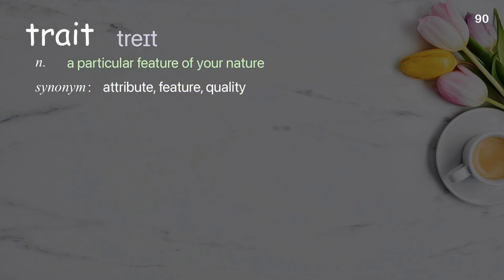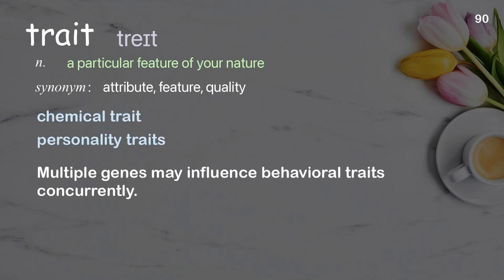Trait: A particular feature of your nature. Examples: Chemical trait. Personality traits. Multiple genes may influence behavioral traits concurrently.